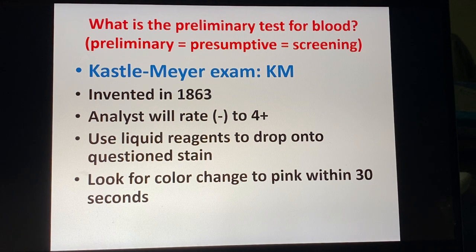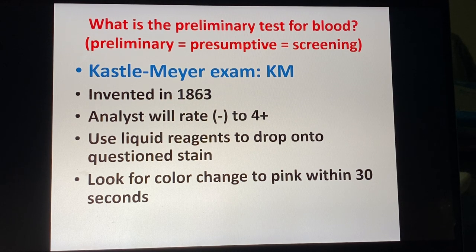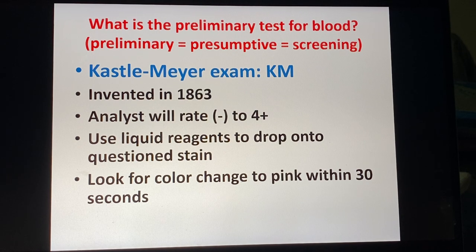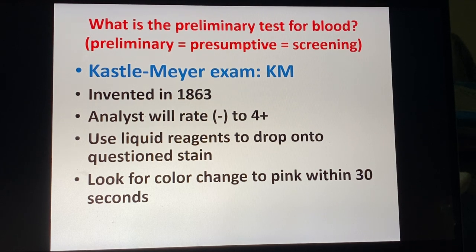There are two types of chemicals — the fancy scientific word for a chemical we use is reagent. There are basically two reagents; you drop them in a certain order onto whatever you want to test. If blood is indicated, the color is going to change to a vibrant pink, usually instantaneously. You don't let the test go longer than 30 seconds. The analyst rates the result from negative — nothing showed up — to four-plus, which means bright pink right away.